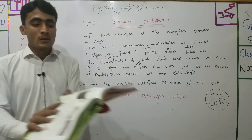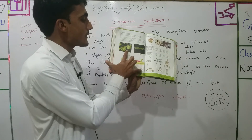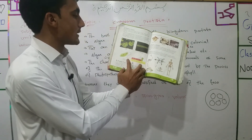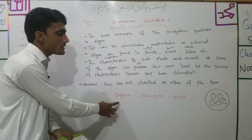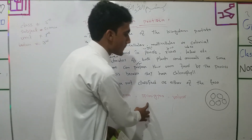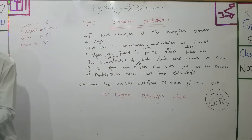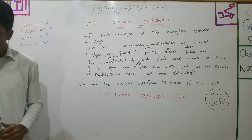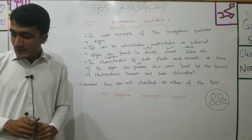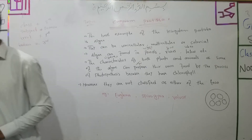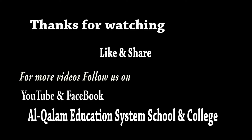If you look at the picture in the book, there is Volvox, that is Spirogyra, and that is Euglena. So Euglena is unicellular, Spirogyra is multicellular, and Volvox is a colonial form.